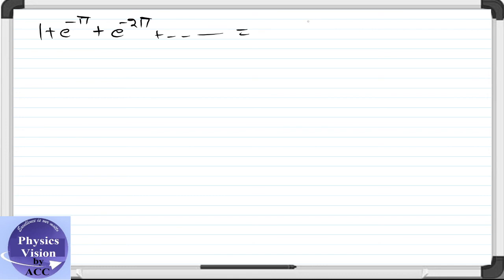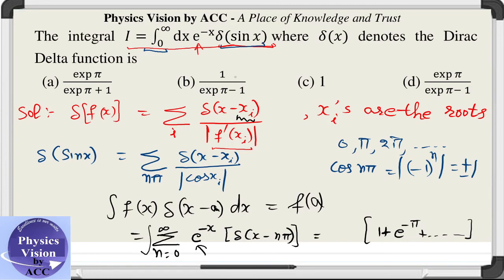This is GP series given by a upon 1 minus r, where r is e raised to the power minus pi. Now substituting this thing, we get e raised to the power pi upon e raised to the power pi minus 1. This is our answer, and this is given by option D. Hence, we have option D is the correct answer to this question.